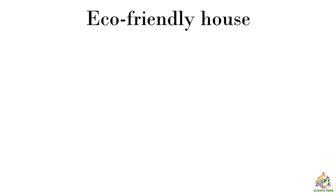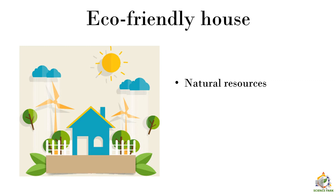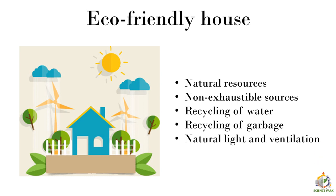You must have heard about eco-friendly houses. An eco-friendly house uses natural resources and does not use artificial resources like cement and concrete. It also uses non-exhaustible resources like windmills and solar energy. Water used inside the home is recycled to conserve it. Recycling of garbage — mainly wet waste — can be used as manure. The house is also constructed in such a way that you get maximum natural light and ventilation throughout the day.